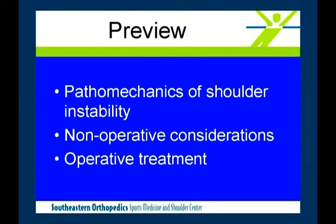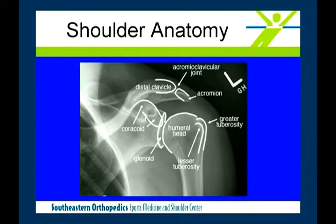My talk is going to be more on the pathomechanics of instability — what is structurally damaged when the shoulder comes out of joint or partially out of joint — and some of my clinical decision-making. I'm going to speak from the perspective of an orthopedic surgeon covering non-operative treatment, operative treatment, and some of the decision-making I go through. First, the anatomy — tonight we're talking about the pathoanatomy of instability, and we're going to focus on ligaments.